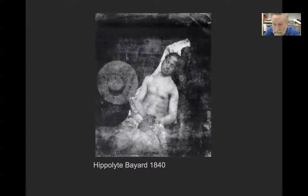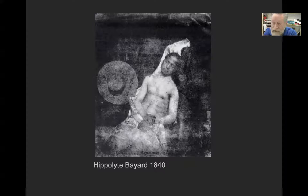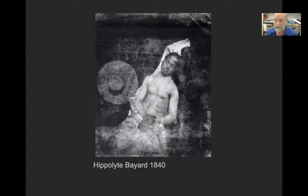This is Hippolyte Bayard, and he took this picture of himself as a drowned man. He wrote a sad story on the back about how this man was robbed of the fame of being the inventor of photography. He did go on to have a very good career in photography and became president of the Parisian Photographic Society.